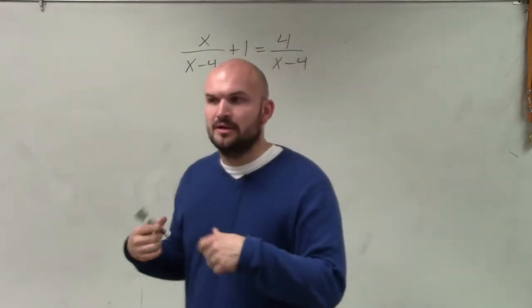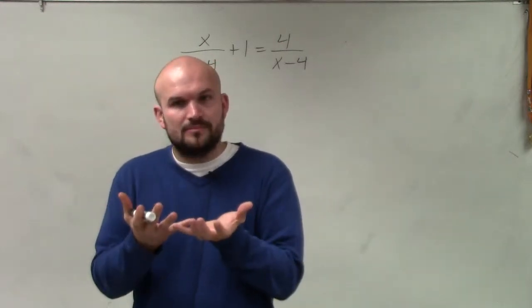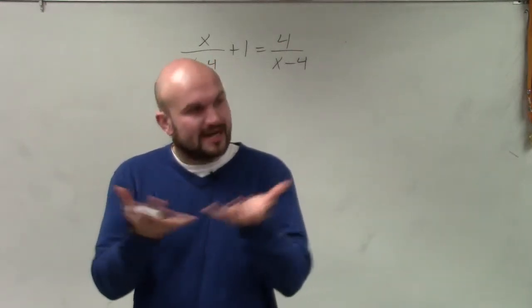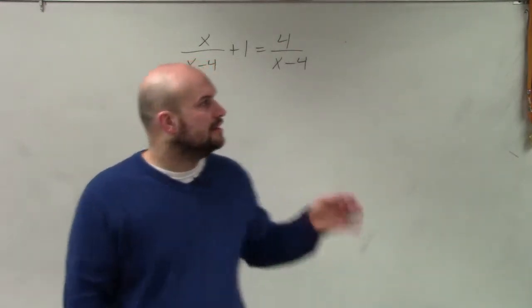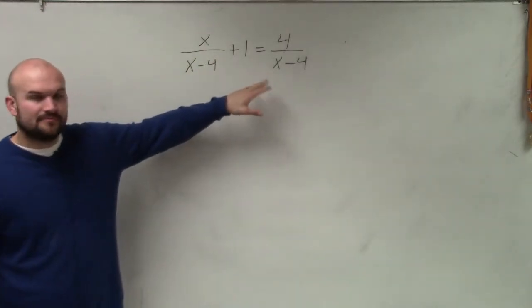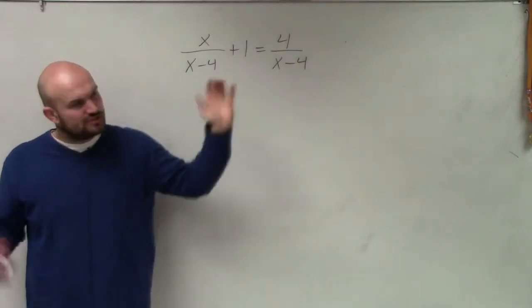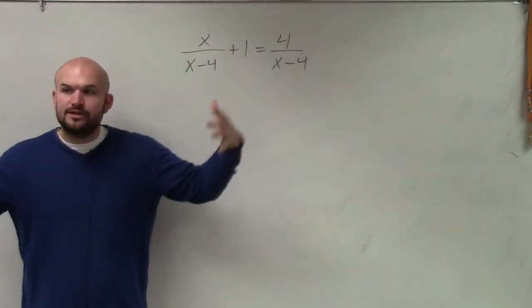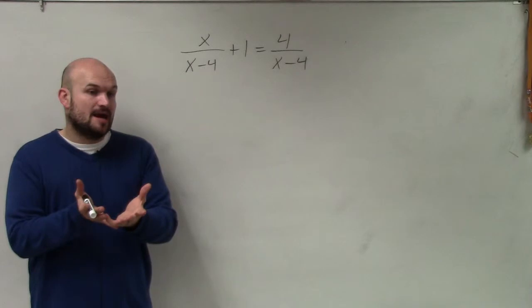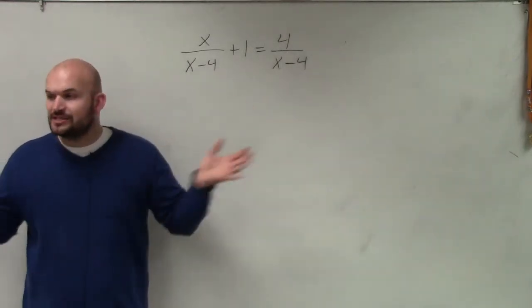On the last example, the purpose was to combine them, right? You're trying to combine them, so you had to get like terms. The purpose in this example, you guys can see we have an equation sign, so we want to solve. It's totally different thinking. One, you're just trying to combine them, so you get like denominators. Here, we're trying to solve.